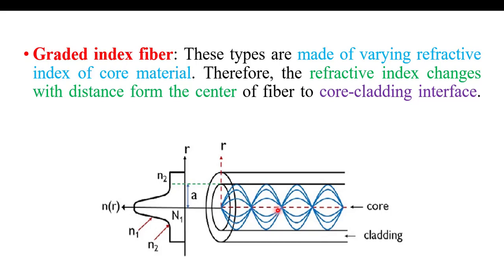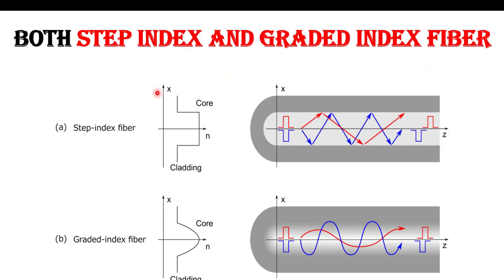In graded index fiber, the ray smoothly propagates within the fiber. Comparing both: in step index fiber, the refractive index of core is constant from the center throughout the core but greater than that of cladding, and a step is formed at the core-cladding interface — the light ray sharply strikes the core-cladding interface, reflects back, and follows a zigzag path. In graded index fiber, the refractive index of core is not constant but continuously varies from center toward the core-cladding interface, always greater than cladding at every point; at the center it is highest. In this type of fiber, the ray smoothly propagates within the fiber.